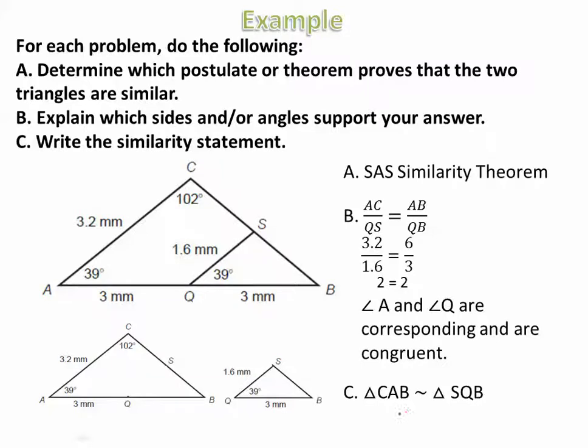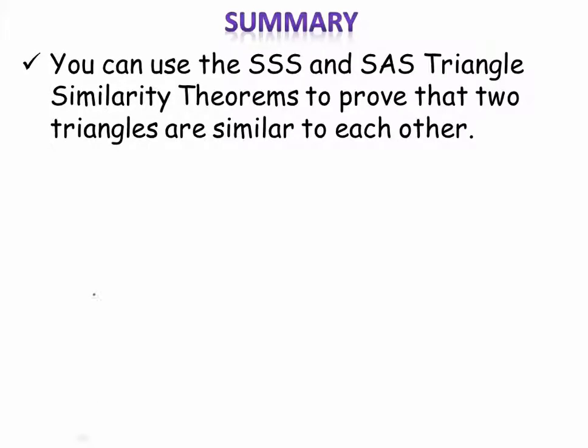And angle A and angle Q are corresponding and are congruent. And then for C, I just write the similarity statement. I did not do this one yet. The triangle CAB is similar to triangle SQB. So when they ask you to write a statement, that's how you're going to write it. And don't forget your little tilde sign right here. That's what tells us they're similar.